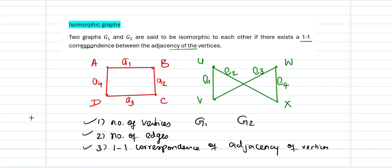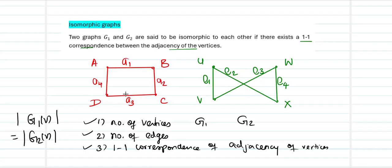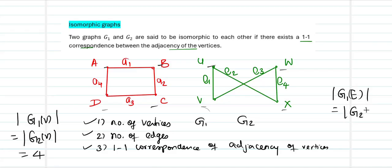Now we can verify. The number of vertices — the cardinality of G1's vertex set must equal that of G2's vertex set. In both cases there are 4 vertices. Next, the cardinality of the edge set of G1 must equal that of G2. There are 4 edges in each graph, so that also checks out.